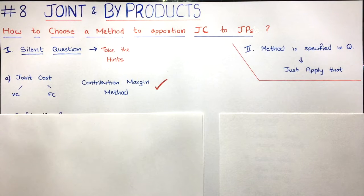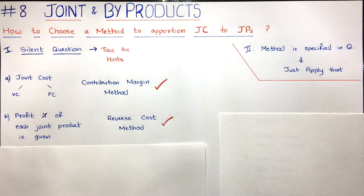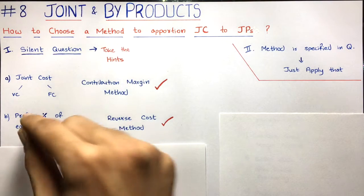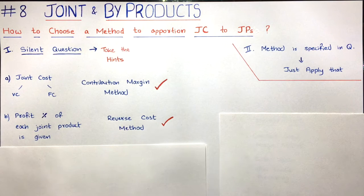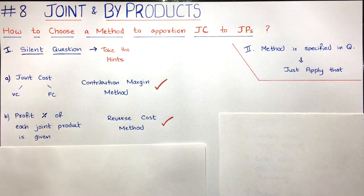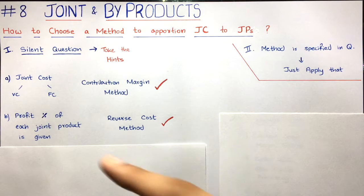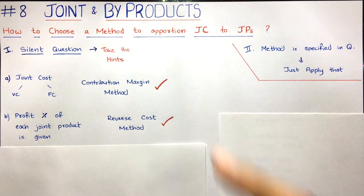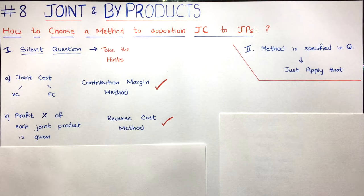The second hint: if profit percentages of each joint product are given in the question, you have to immediately understand that profit percentages are useful only in the reverse cost method. So you have to apply the reverse cost method.